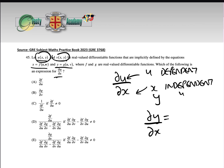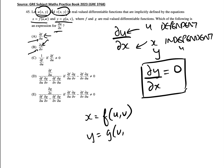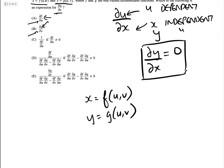For exactly the same logic as the previous question, we know that the partial derivative of y with respect to x is going to equal zero — and that is the key to solving this question. Looking at all the answers, they all involve partial differentials of either f or g with respect to u or v. We're going to use the chain rule on x equals f(u,v) and y equals g(u,v), differentiating both partially with respect to x. The differential of x with respect to x is just 1.